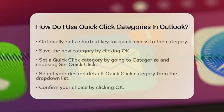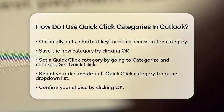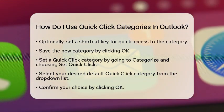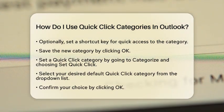Now that you have your categories set up, it's time to set a Quick Click category. Again, go to the ribbon under the Tags group. Click on Categorize and then choose Set Quick Click. From the drop-down list, select the category you want to use as your default Quick Click category. Click OK to confirm your choice.